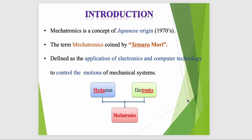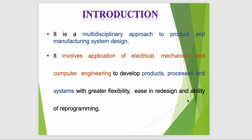Mechatronics is defined as the application of electronics, computer technology, and to control the motion of a mechanical system. If you want to control a mechanical system, you take the help of an electronic system and a computer system — that is all known as mechatronics. Mechatronics involves the application of electrical, mechanical, and computer engineering to develop products, processes, and systems with great flexibility. These three words — product, process, and system — are the key keywords of any industry.